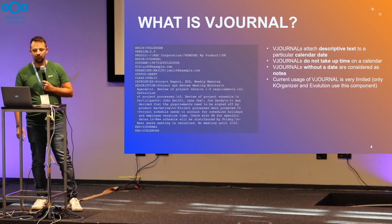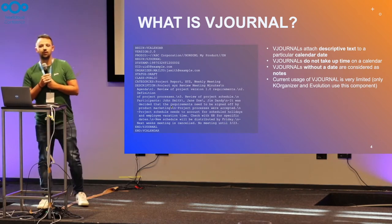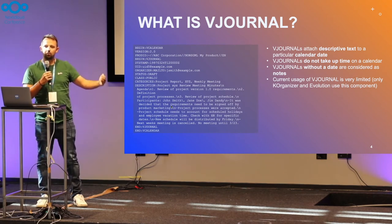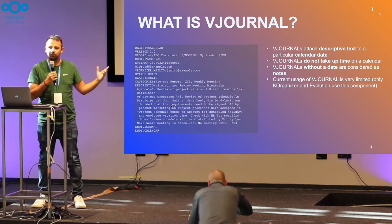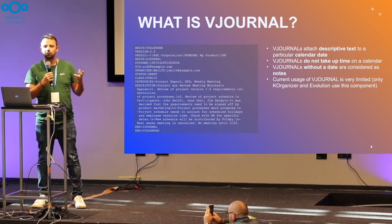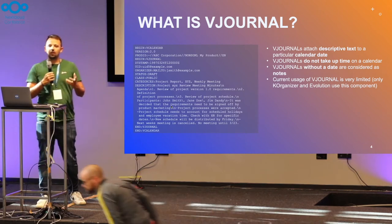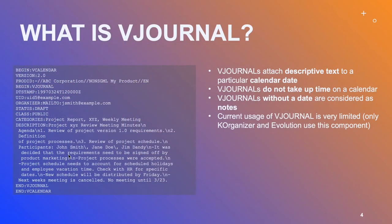So what is the vJournal actually? The vJournal attaches descriptive text to a particular calendar date. Basically, it has a start date but no end date, so it doesn't take up any space in the calendar. You could also have an entry with no start date at all, which would make it simply a note. So it defines an interoperable format to exchange journal entries like a diary or meeting minutes over the internet, and also a format to exchange notes with other apps.